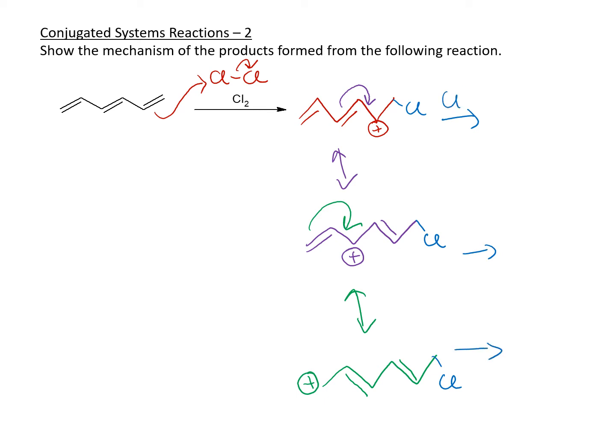So Cl minus. This will add right here. And so for the first one, we will have a double bond here, double bond here, chlorine here, and a chlorine here. So that is a 1,2 addition.